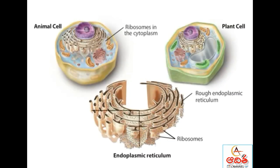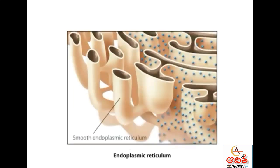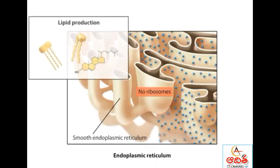The rough ER is contiguous with the smooth ER, which lacks ribosomes on its surface. The smooth ER is the site of lipid production.